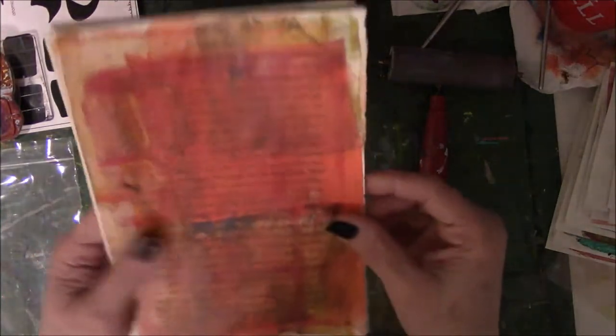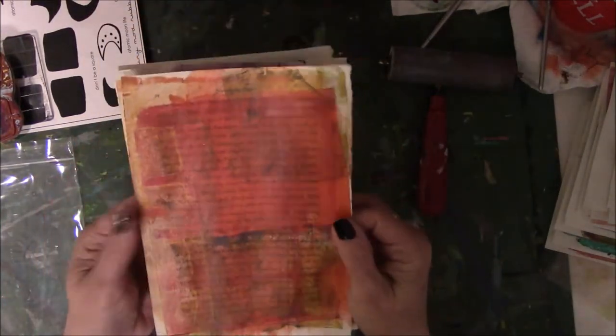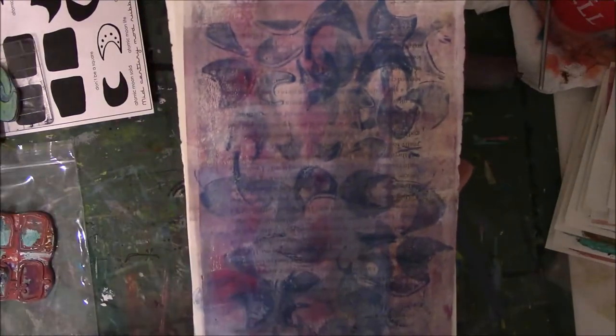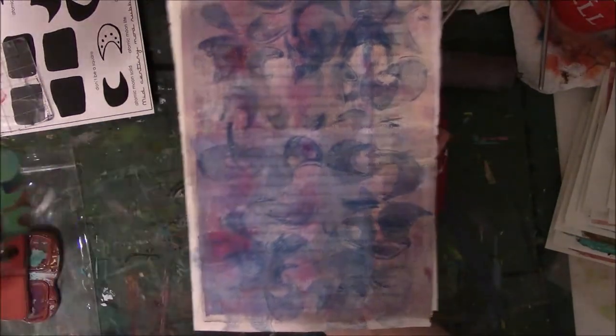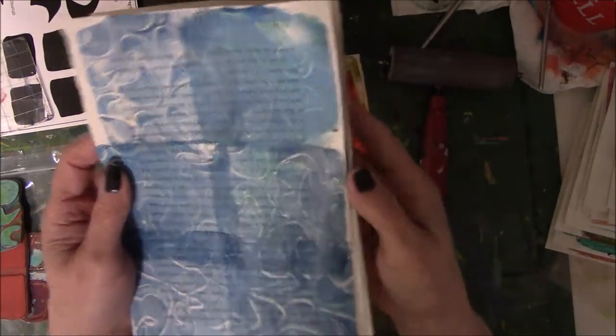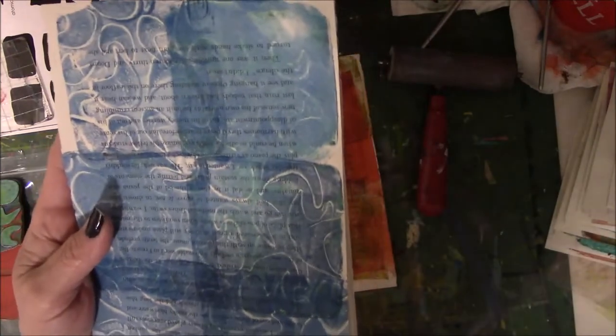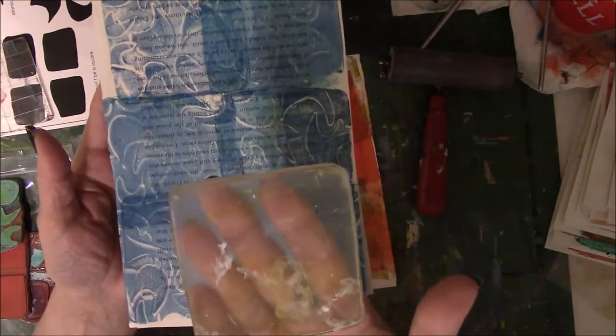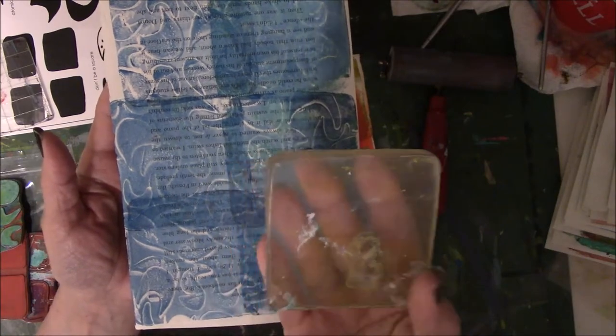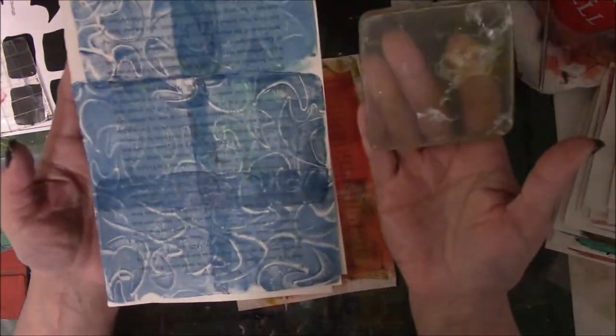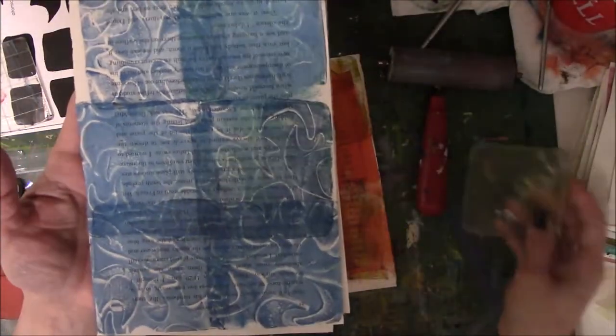So yesterday, while I was trying to film, I did book pages and jelly printed them. Some you can see where I did the stamping of the larger squarish ones. Not on that one. But look at this one. These were all done with DecoArt paint and acrylic paint and fluid acrylics and Traditions paint. Here's another one. Now this one was done as a roll off for another page.